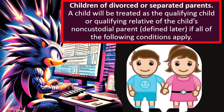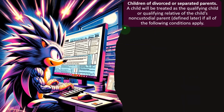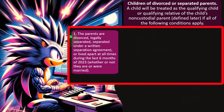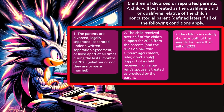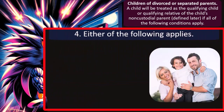A child will be treated as the qualifying child or qualifying relative of the child's non-custodial parent if all of the following conditions apply. Number one, the parents are divorced, legally separated, separated under a written separation agreement, or lived apart at all times during the last six months of 2023, whether or not they were married. Number two, the child received over half of their support for 2023 from the parents, and the rules on multi-support agreements don't apply. Support received from a parent's spouse is treated as provided by the parent. Number three, the child is in the custody of one or both parents for more than half of 2023.